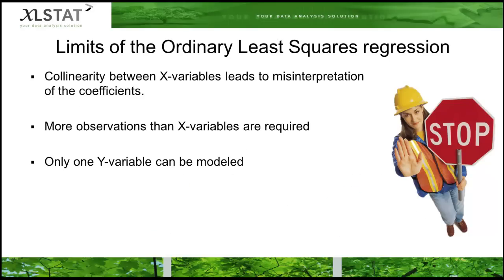However, we should stress that ordinary least squares regression has some limitations. Firstly, the redundant information in the explanatory variables that we can measure by their collinearity can lead to a misinterpretation of the model and the beta coefficients. Then, it is necessary to have more observations than the number of X variables. Finally, only one response variable can be modeled.